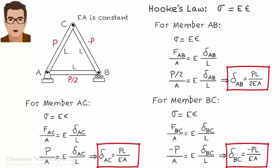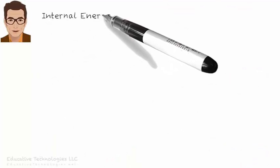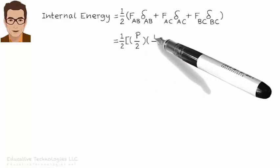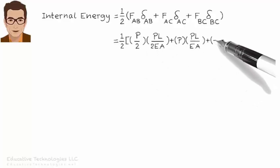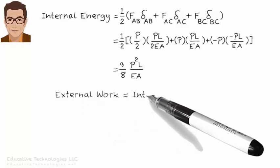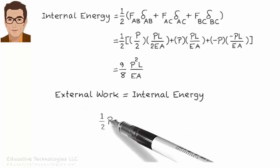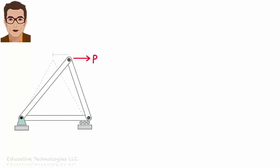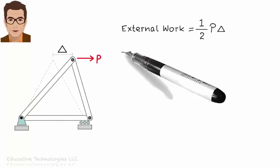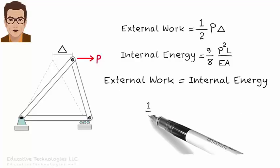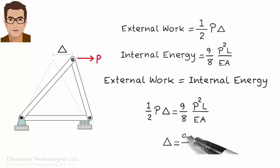Then the total internal energy stored in the truss equals the sum of energies in each member. Equating the external work to the internal energy, we get this equation. Now solve for delta. So now we know a thing or two about formulating external work and internal energy expressions for trusses, and how to use the work energy principle to calculate truss deflections.